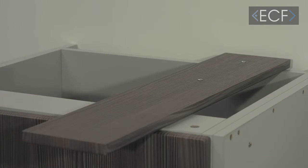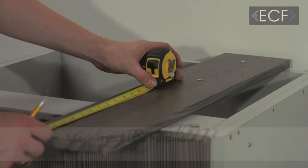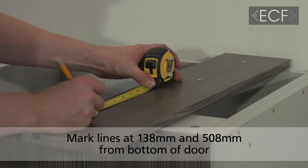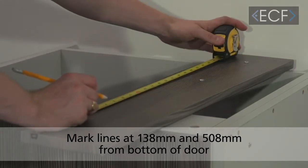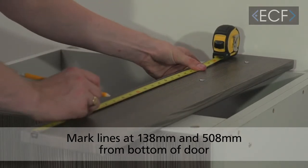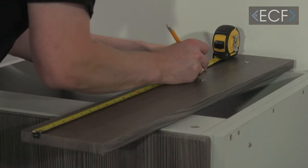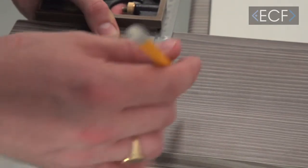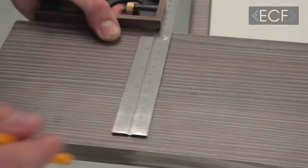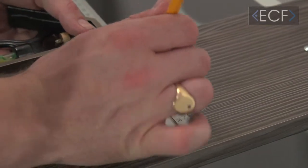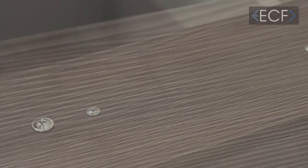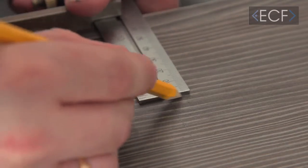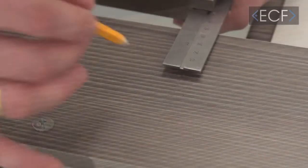Now measure up your door for the brackets. You need a line 138mm from the bottom of the door and another one at 508mm. Mark the center line on each.